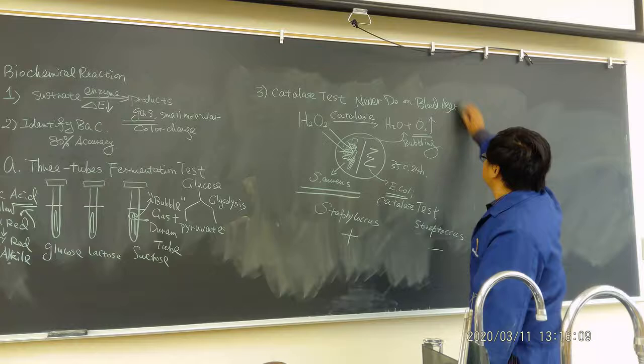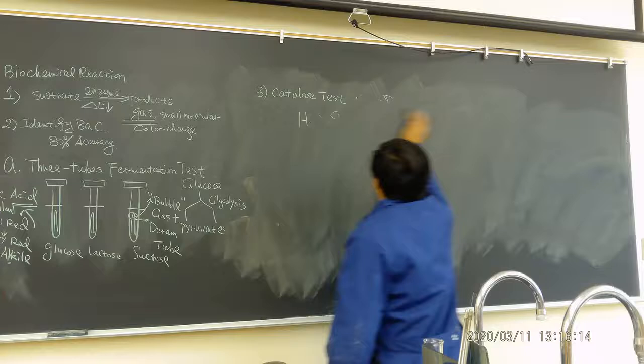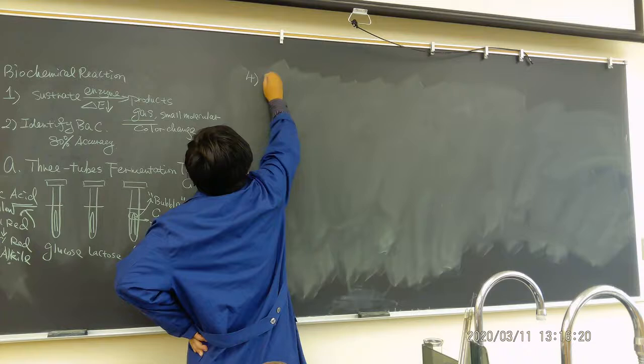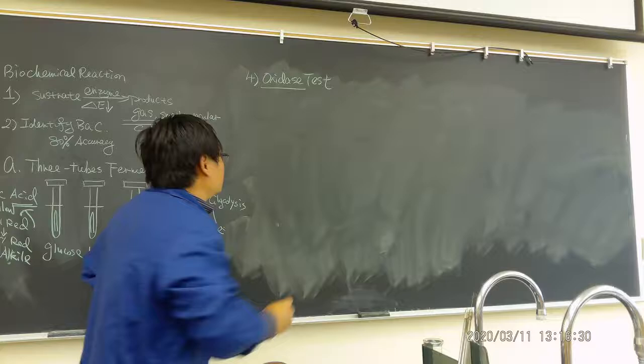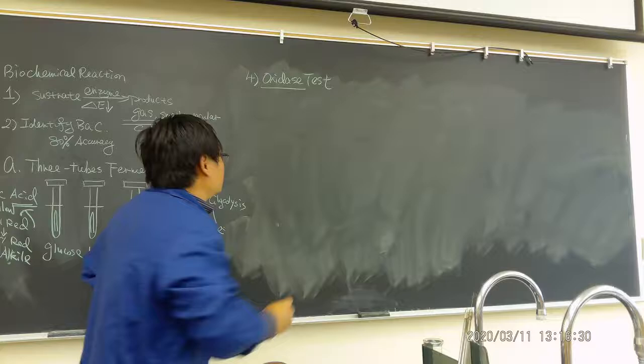The fourth test is the oxidase test, which is related to the electron transport chain (ETC). For bacteria, the electron transport chain is located in the cell plasma membrane.